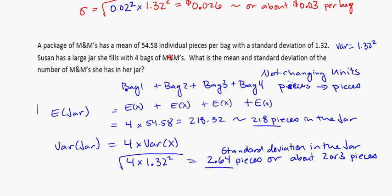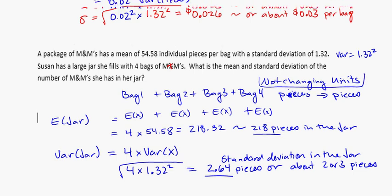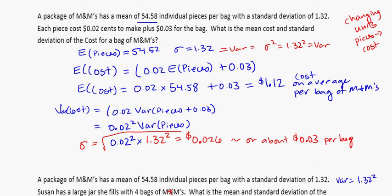So here I've got more of the same thing. I'm counting 4 bags in a row so I just add everything up, so I'm just going to multiply by 4 in both cases. I'm not using the squared here because I'm not changing units, versus in the previous situation I was going from pieces to cost so I'm using the formula and I'm squaring the variance.